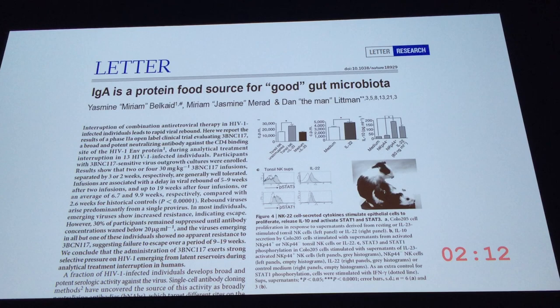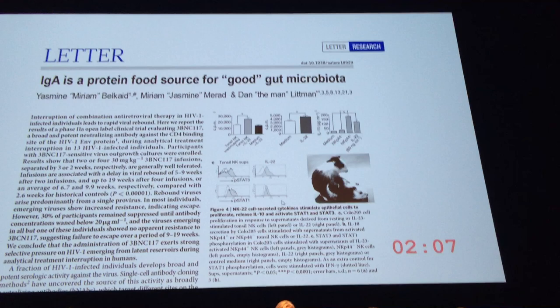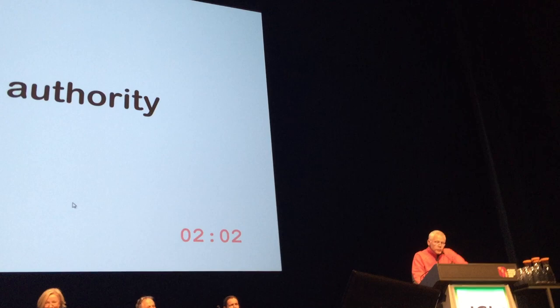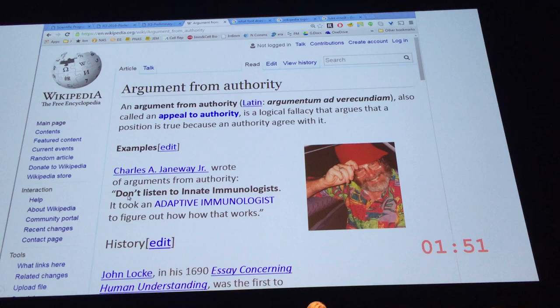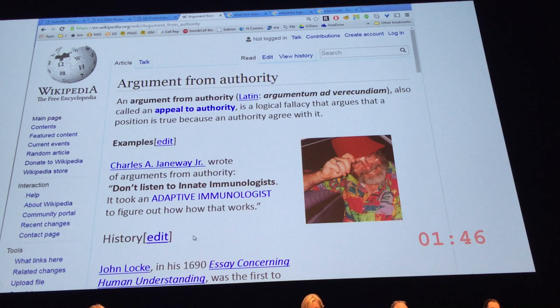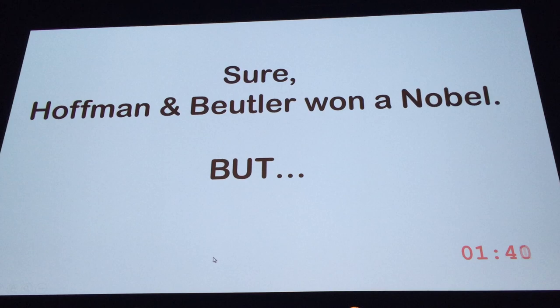The second flaw they're going to give you is appeal to authority — a logical fallacy. Charlie Janeway talked about this: 'Don't listen to innate immunologists.' After all, it took an adaptive immunologist to figure out how this stuff works. And sure, Hoffmann and Beutler won a Nobel, but they ain't Australian.